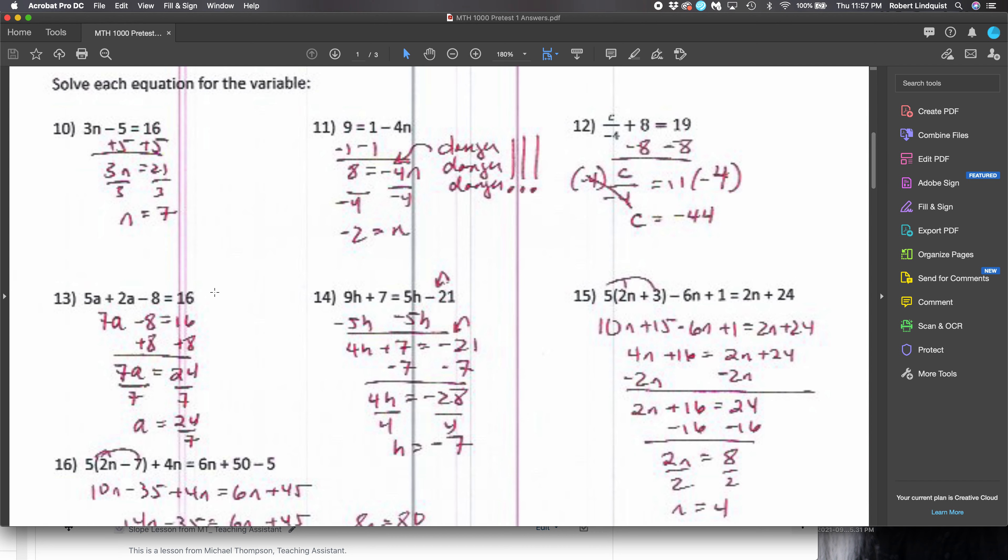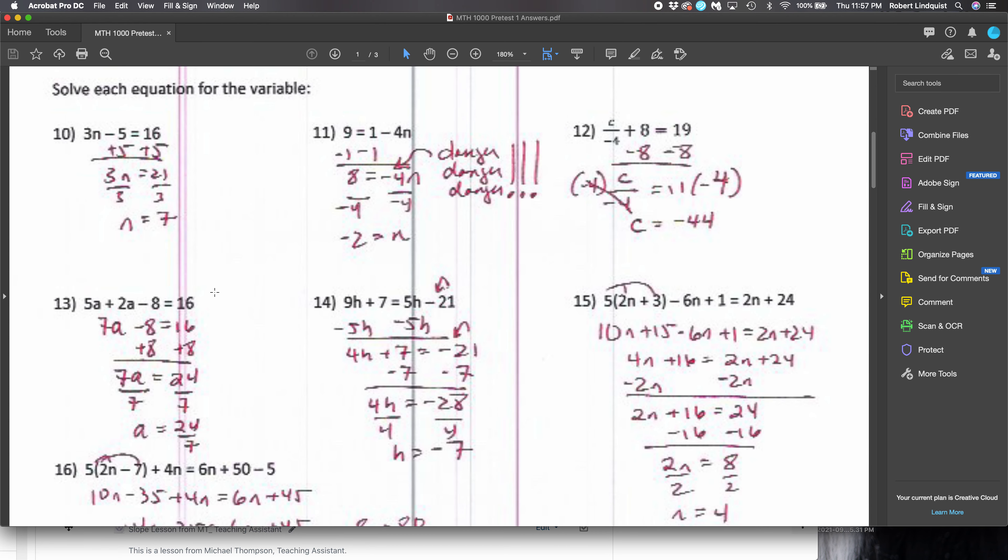All right, here's numbers 10 through 15. Again, you stop and start to your advantage here - this is the video.